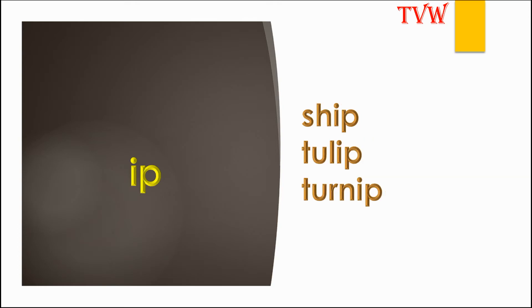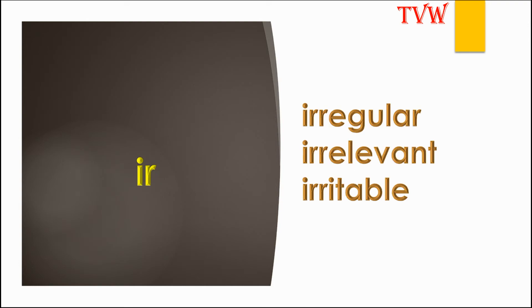The letters IP make the sound 'ip' as in ship, tulip, turnip. The letters IR make the sound 'ir' as in irregular, irrelevant, irritable.